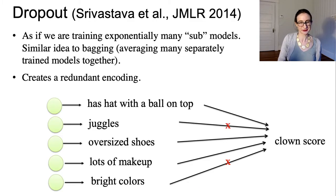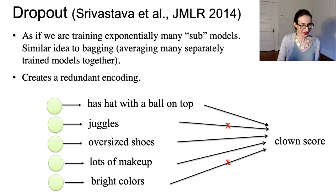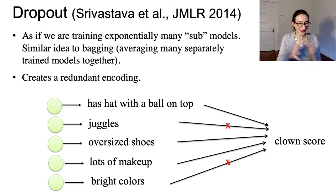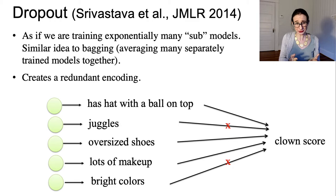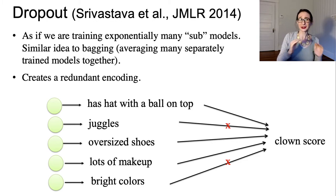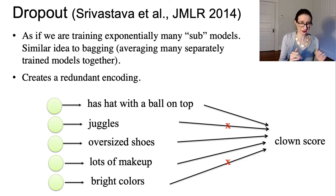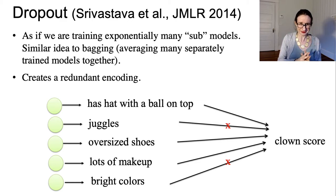Here's an example where we're trying to judge whether someone is a clown. We have all of these features that are actually quite useful for determining whether someone is a clown. For this sub-model, I'm ignoring the information about whether they juggle and whether the person is dressed in bright colors, and just creating a sub-model from the other information.